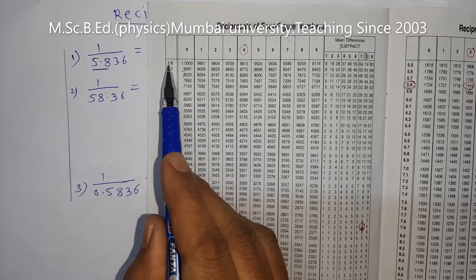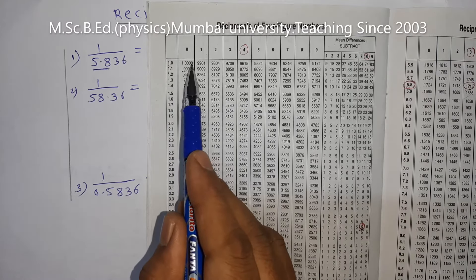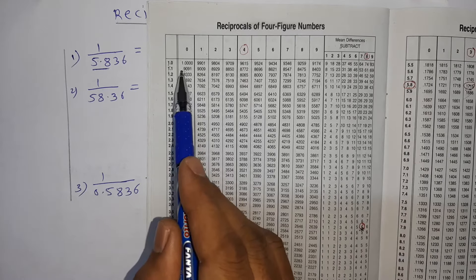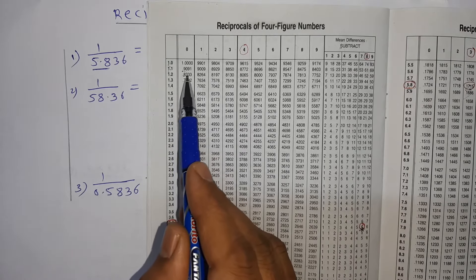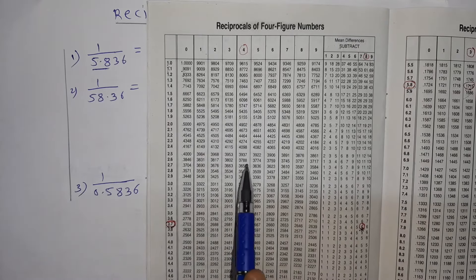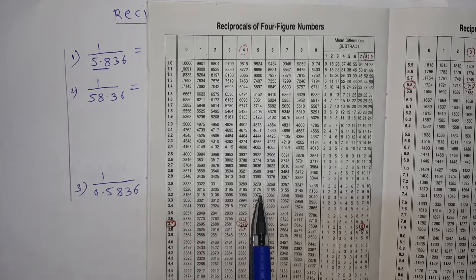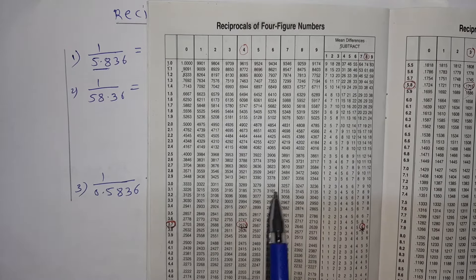One more thing about the reciprocal table: if you see carefully, the reciprocal of one is 1.000 — obviously one upon one is one. But if you see other numbers, it is 0.9091, 0.8331 — that means all other numbers give a zero-point answer. So our answer must begin with zero point, for any given number other than one.